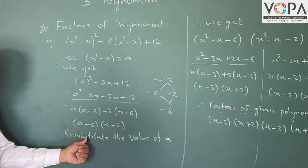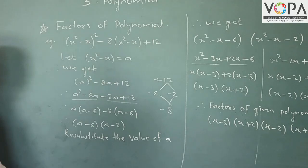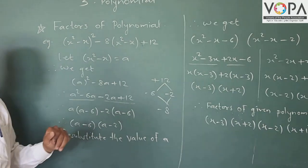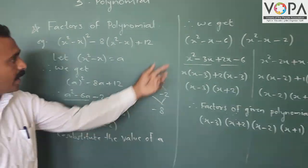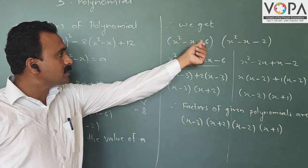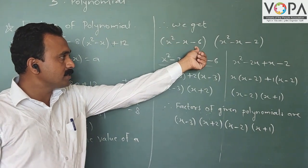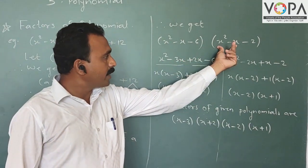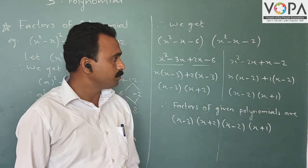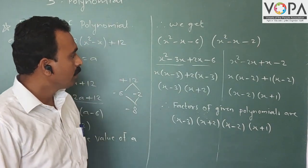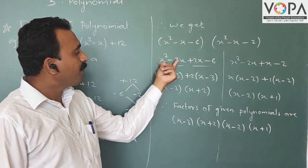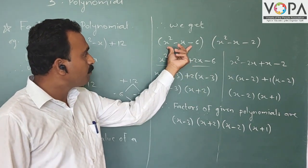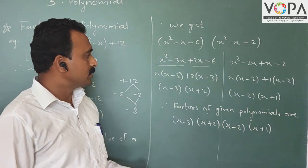Now resubstitute the value of a, where a = x² − x. Then we get (x² − x − 6) and (x² − x − 2). So the expression factors into (x² − x − 6)(x² − x − 2). Now we can find further factors of both polynomials.